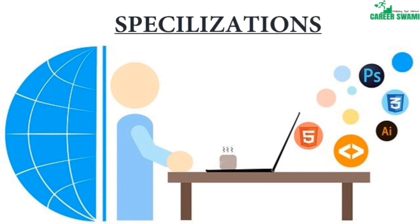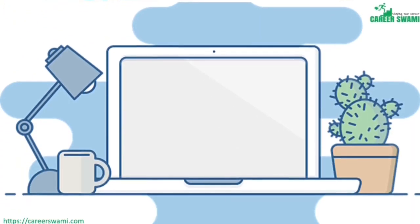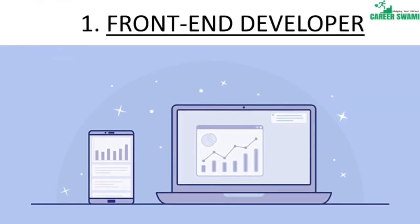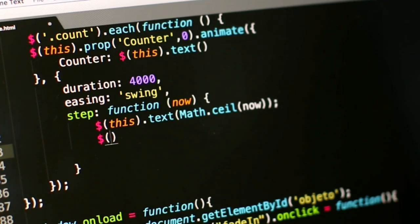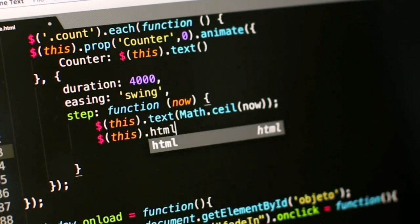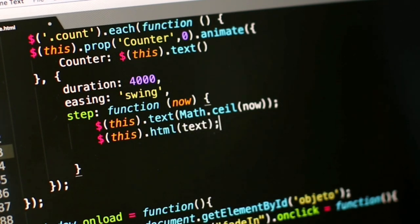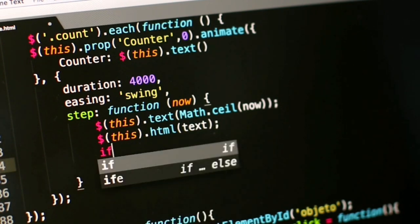There are majorly three kinds of specializations: front-end developer, back-end developer, and full stack developer. A front-end developer is also known as a web designer, responsible for creating the website's overall look — how it appears on different devices like mobile, PC, or laptop, how text, colors, and images are placed and organized. The main programming languages used for front-end development are HTML, CSS, JavaScript, Angular, etc.